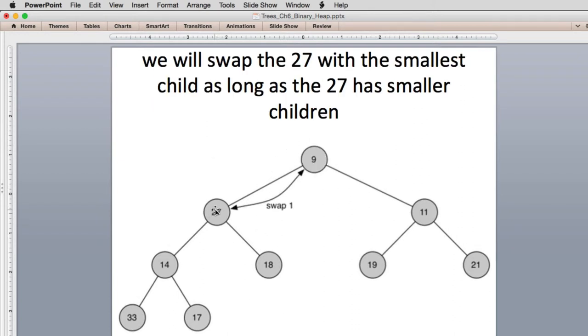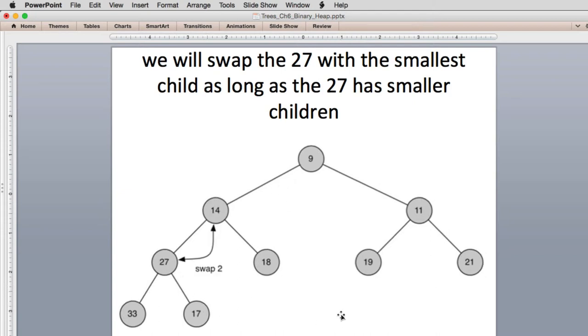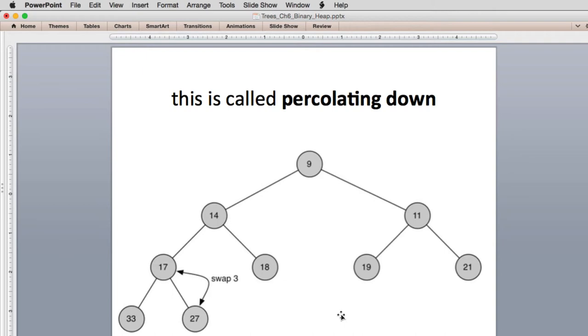So now it's still out of order. We swapped with the 14, which is the smallest of 14 and 18. And then at the last we swapped with the 17. So it's going to end up down here at the end. And then we're all done. This process is called percolating down.